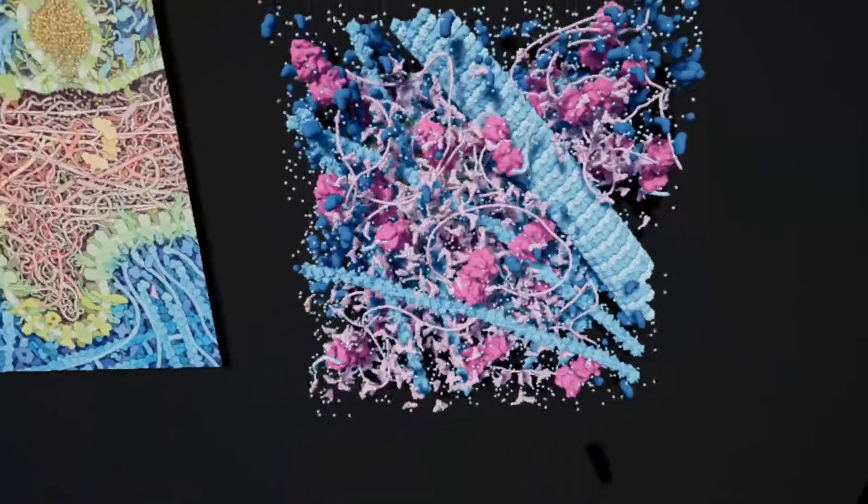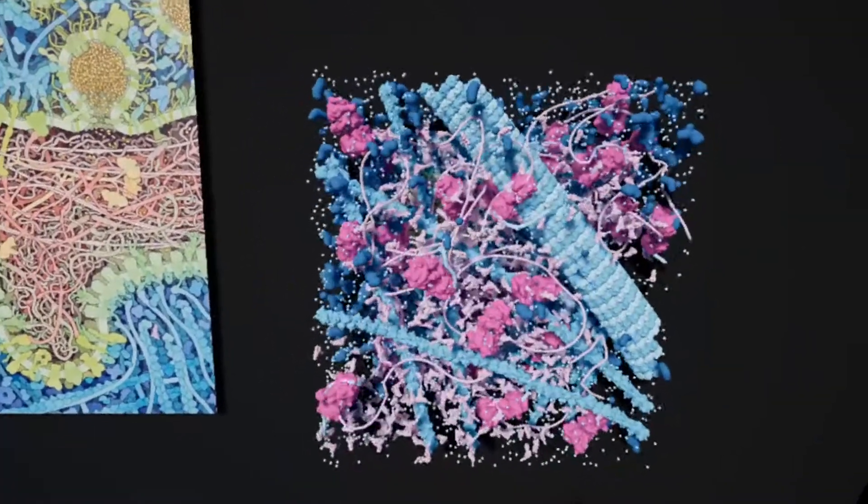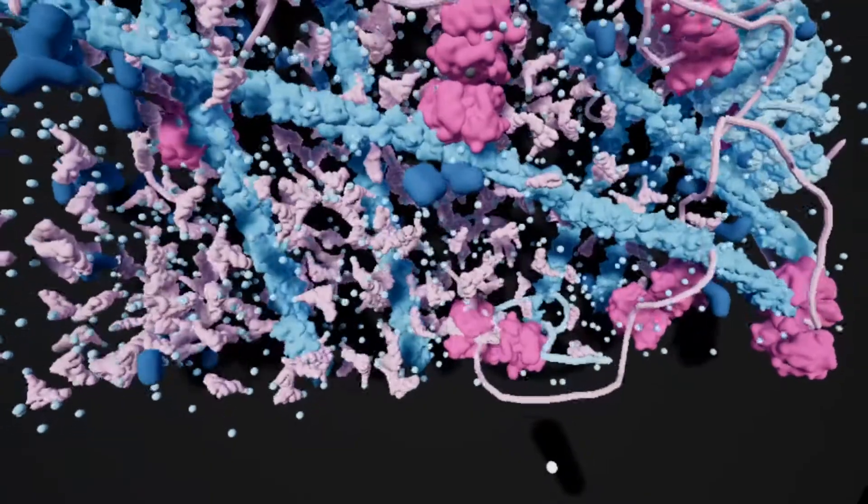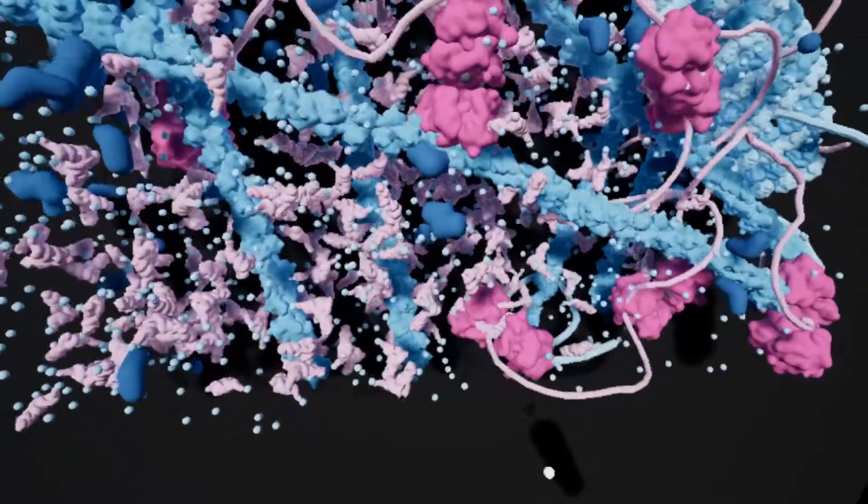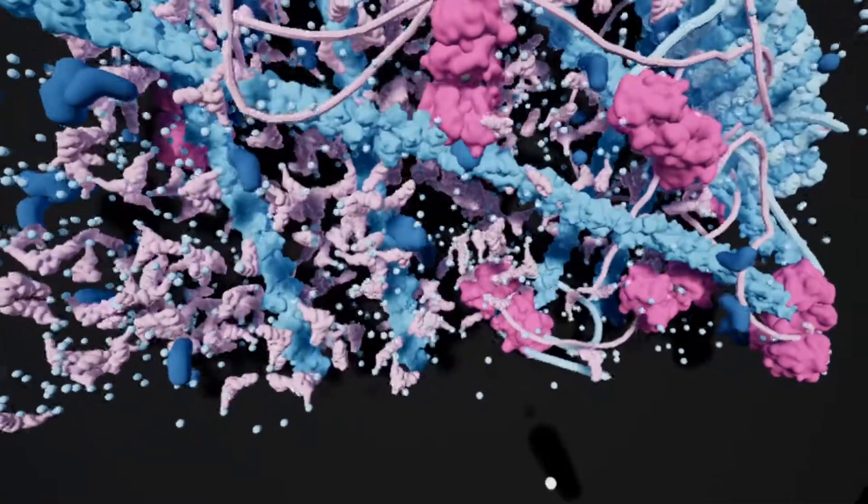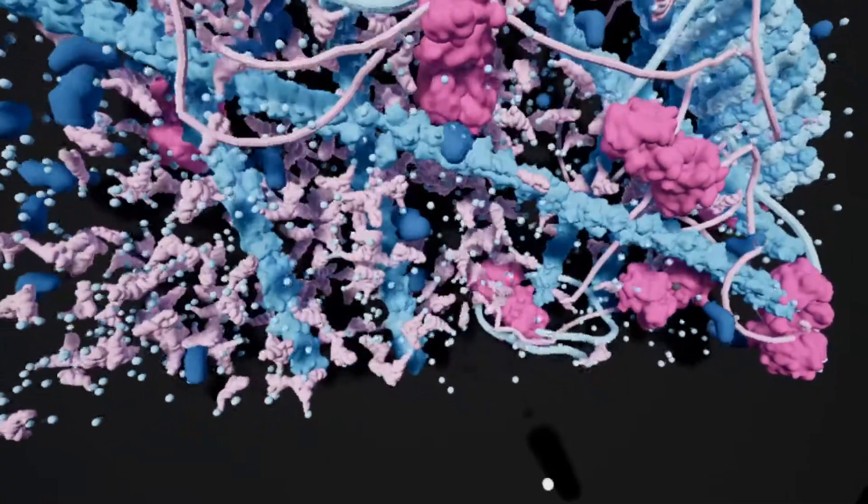Ribosomes attach to mRNA at start codon sequences. tRNAs with corresponding codons on the mRNA enter the ribosome, carrying an amino acid. As a ribosome marches along the mRNA, the amino acid from the tRNA is transferred to a growing polypeptide chain.